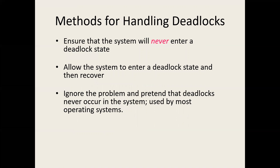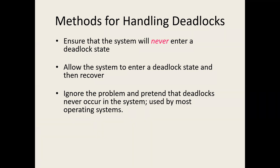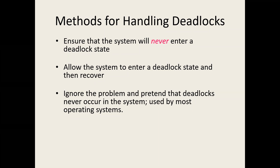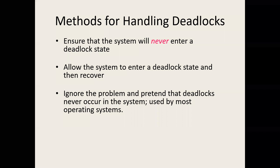When we consider different ways of handling deadlocks, we can ensure the system will never enter a deadlock situation — that is the best option. The second option is to allow the system to enter a deadlock state and then try to recover from it. The third method is to ignore the problem and pretend there are no deadlocks, which is what most operating systems currently use.